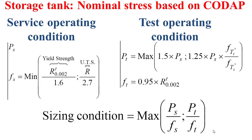The nominal stress Fs is determined based on the minimum between the yield strength divided by 1.6 and the ultimate tensile strength divided by 2.7. The yield strength is determined at the temperature of service, since the yield strength depends on temperature.